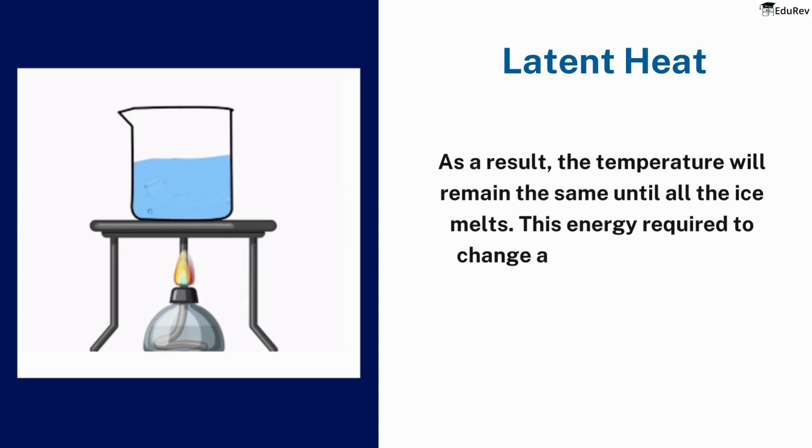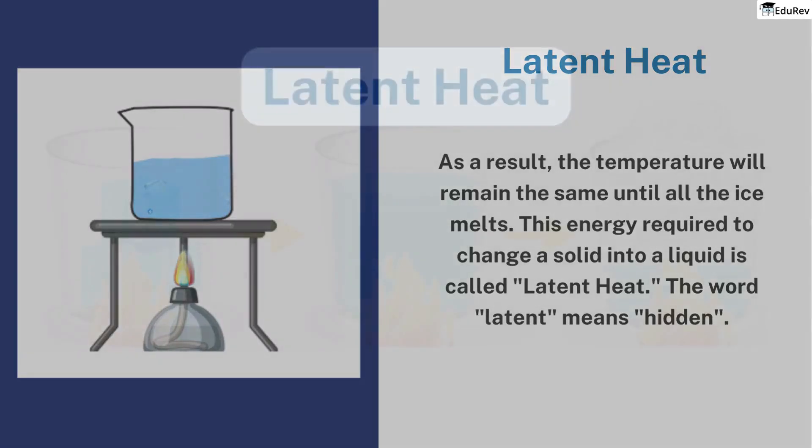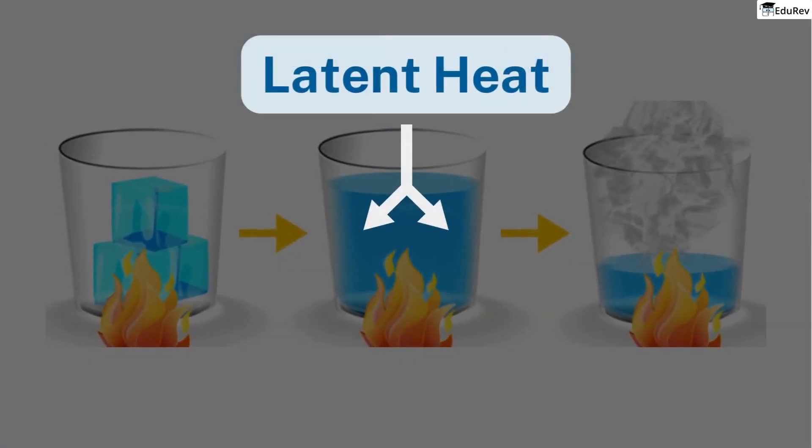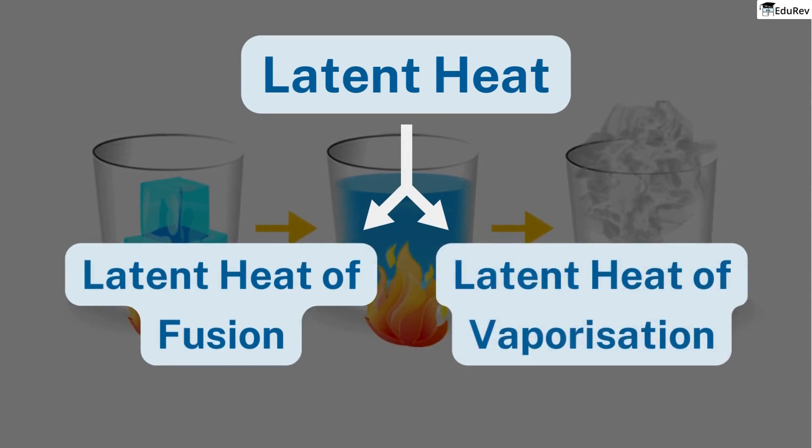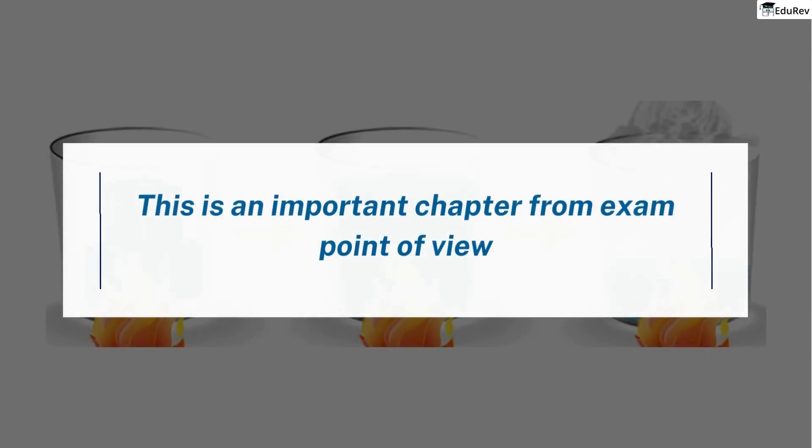This energy required to change a solid into a liquid is called latent heat. The word latent means hidden. Now, there are two types of latent heat: latent heat of fusion and latent heat of vaporization. This is a very important topic from the examination point of view, so make sure you listen closely and take some good notes.